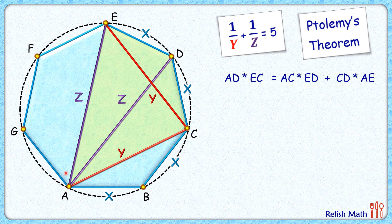Putting in the values: AD length is z, EC length is y, AC length is y, ED length is x, CD length is x, and AE length is z. So we have z × y = y × x + x × z. Now dividing this full equation by xyz,